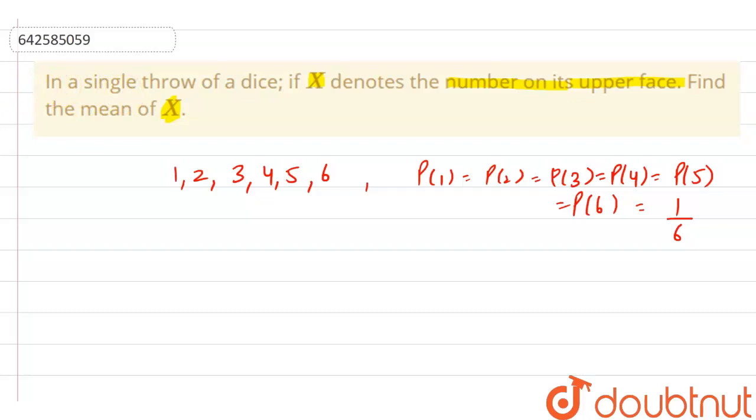So here, now let's first make the probability distribution. So we can say that the probability distribution is as X such that when X is 1, 2, 3, 4, 5 and 6.